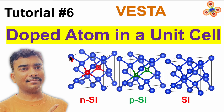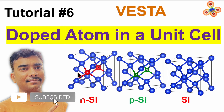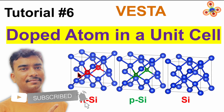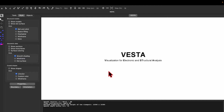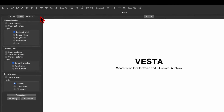In this tutorial number 6 on Vista software, I will show you how to visualize a doped atom in a unit cell. We will consider the example of n-type and p-type silica, where phosphorus and boron are doped at the silica site. So let's go and open the Vista software.